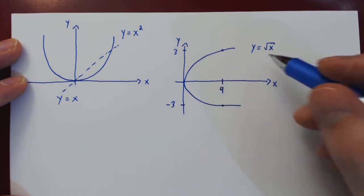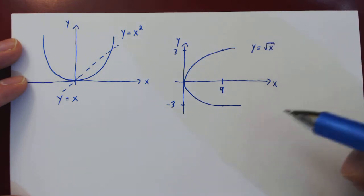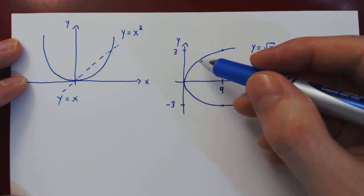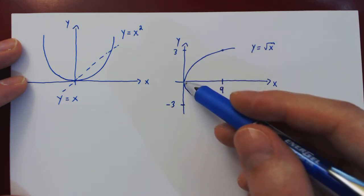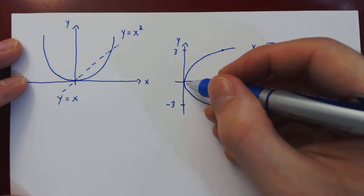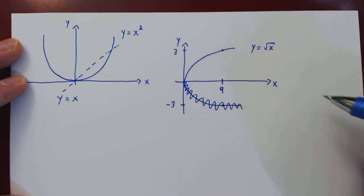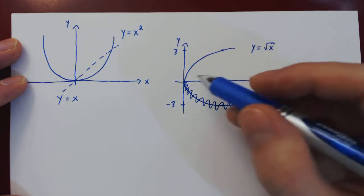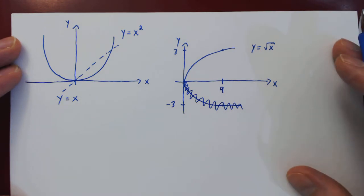But when dealing with the square root numerically — in the case of limits, for example — we want the square root of x to be a function. To this end, we have to make a choice: do we pick the positive branch of the square root, or the negative branch? The simpler choice is the positive branch. So in viewing the square root of x as a function, we make an arbitrary choice to only consider the positive solutions — the positive branch of the square root.